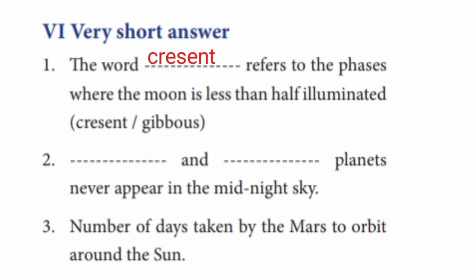Question 2: Mercury and Venus are the planets that never appear in the midnight sky.